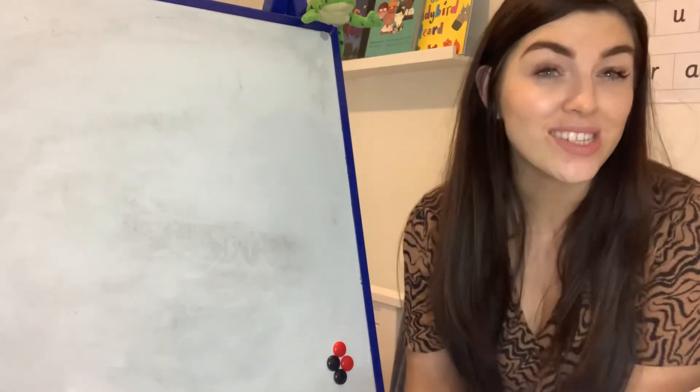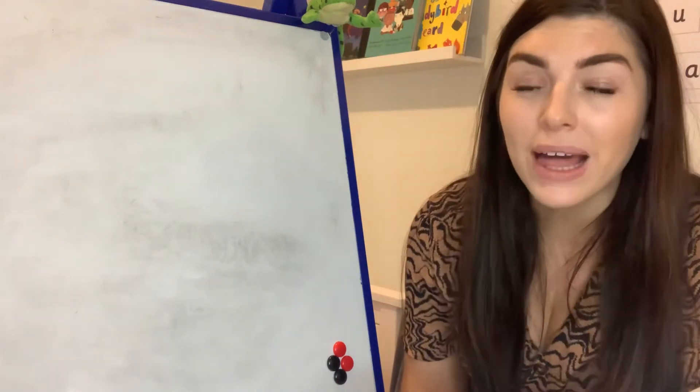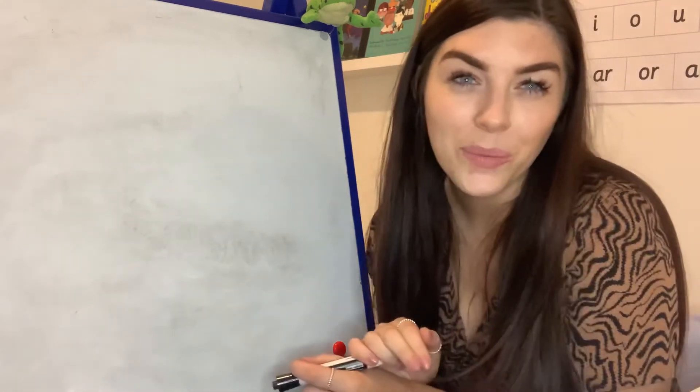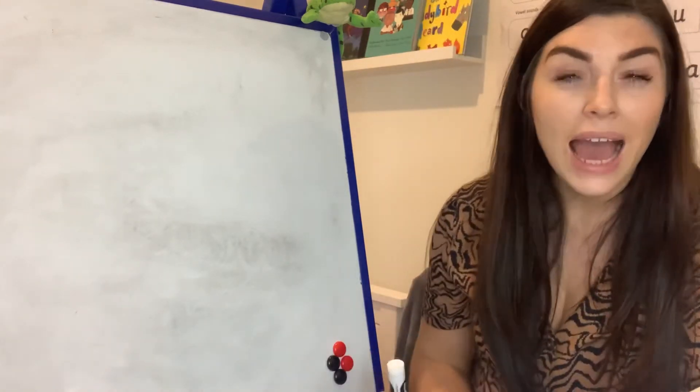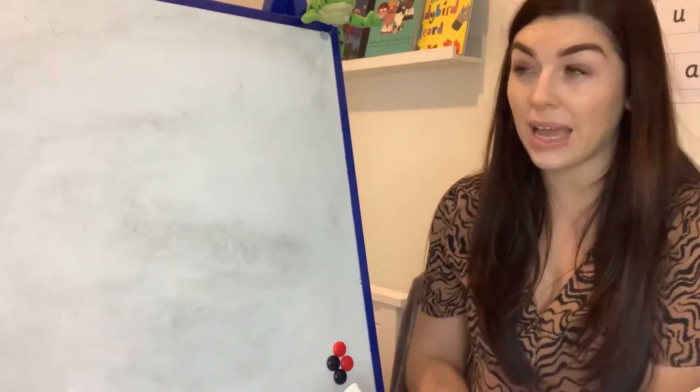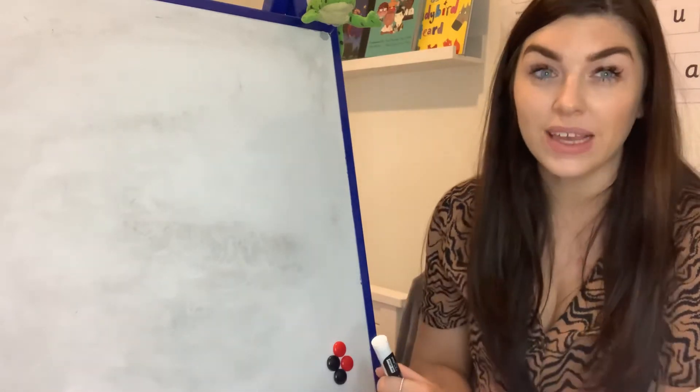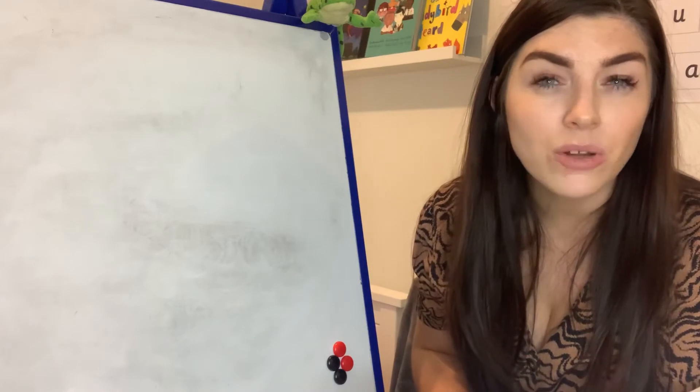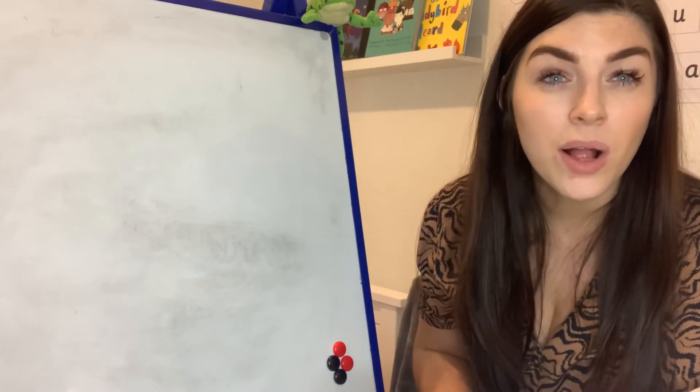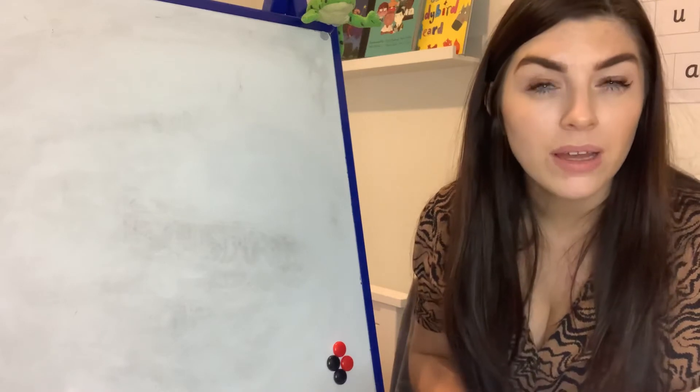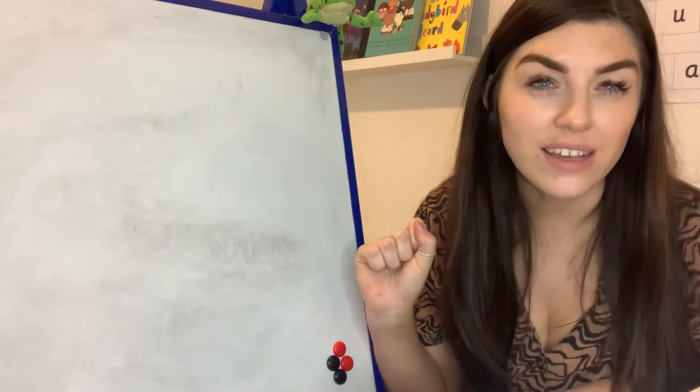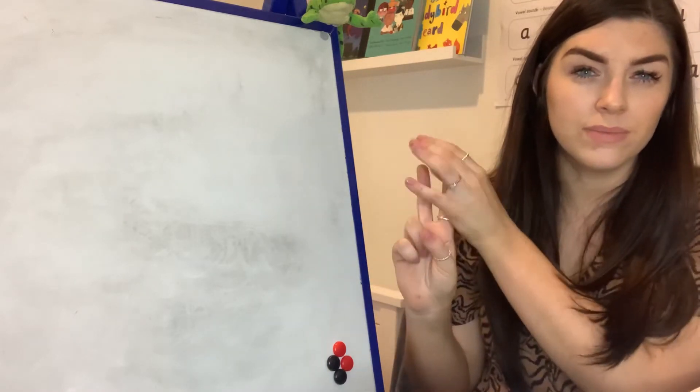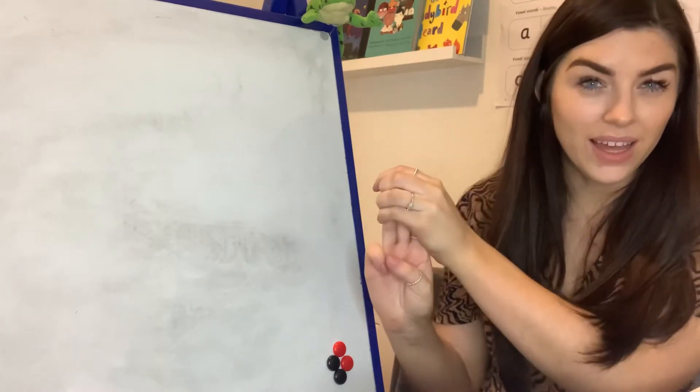Okay, to finish our word time session today we're going to practice doing some spelling with our Fred fingers. So can you get your Fred fingers ready for me? Well done. Okay, I'm going to give you some words that I want you to have a go at writing on your board. I need you to listen very carefully to each word. The first word I want you to write is ship. Ship. Ship. Can you show me with your Fred fingers how many sounds there are in ship?